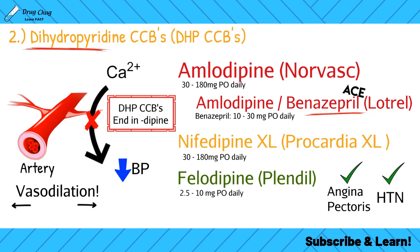Because DHP calcium channel blockers cause vasodilation in our arteries, it makes sense they're used to treat angina pectoris and hypertension. For angina pectoris, the patient's heart is working hard. By relaxing the arteries, the heart doesn't have to pump as hard. For hypertension, blocking calcium channels on the arteries directly causes vasodilation, which decreases blood pressure.